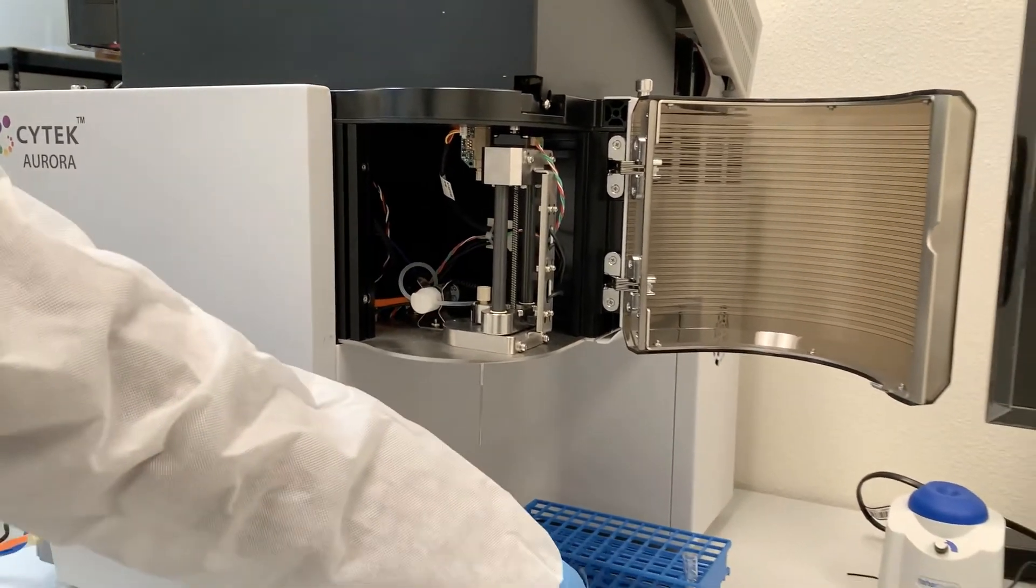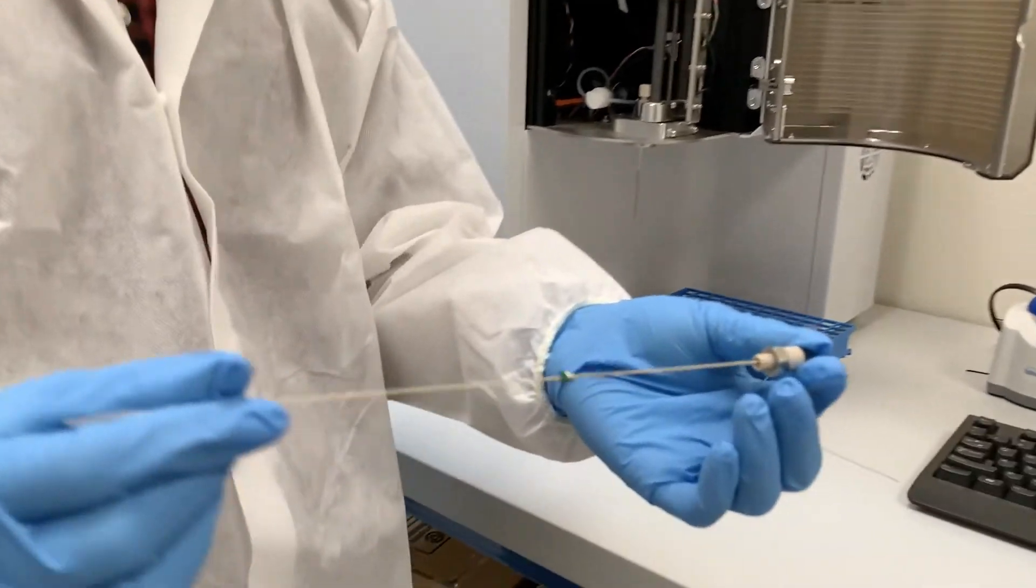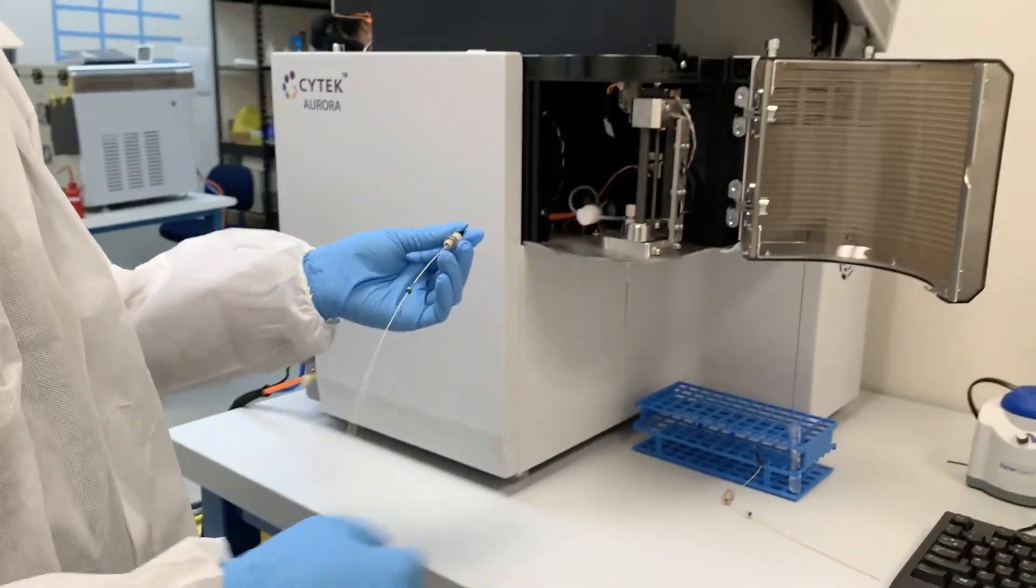Go ahead and slide out the sample line and discard it in a biohazardous waste bin. Grab your new line and inspect it to make sure it isn't kinked or bent and that the components are intact.